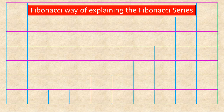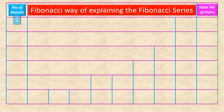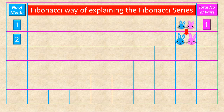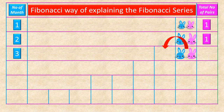Fibonacci's way of explaining the Fibonacci series: During the first month, a pair of newly born rabbits is kept in an enclosed field. At the end of the first month, the total number of rabbit pairs is one. During the second month, the first pair of rabbits is two months old and attains adulthood. At the end of the second month, the total number of rabbit pairs is still one. During the third month, the first pair of rabbits is three months old. The first adult female rabbit gives birth to a new second pair of baby rabbits. At the end of the third month, the total pair of rabbits is two.